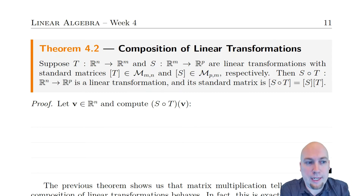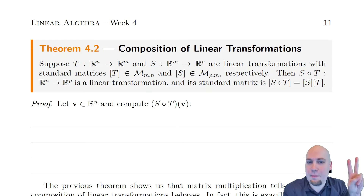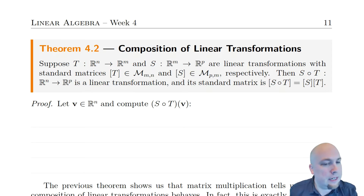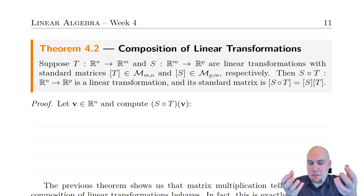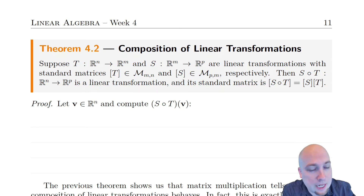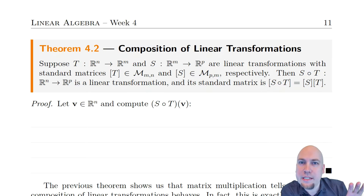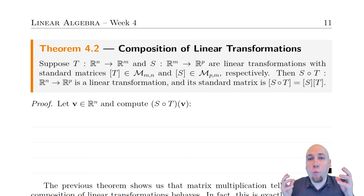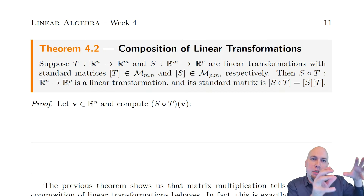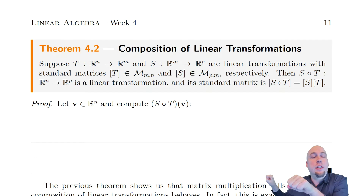That's the content of this theorem we're going to go through now. It says that if we've got two linear transformations and compose them together to construct S composed with T, then two things happen. First, this composed function is a linear transformation. The fact that the composition of two functions is always a function was obvious, but what was not obvious is that it would be a linear transformation. So if you compose two linear things, you get something that is still linear. And the second part says that the standard matrix of the composition is just the product of the individual standard matrices.